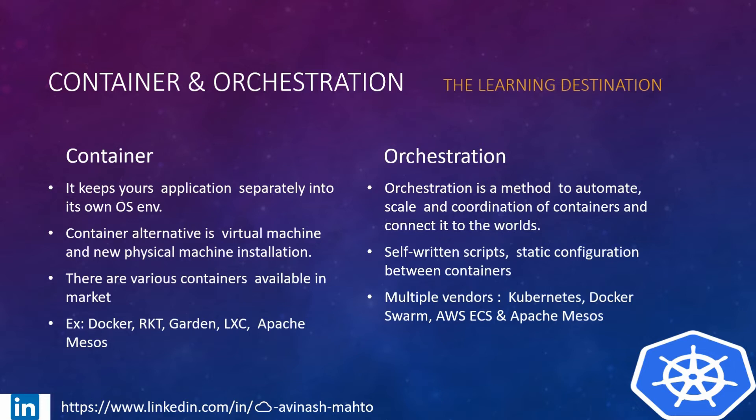Orchestration is a method to automate, scale, and coordinate containers and connect to the world. If I talk about the alternative of orchestration, you can write some scripts or programs, or do static configuration between containers. There are also vendors in orchestration like Kubernetes, Docker Swarm, AWS ECS, and Apache Mesos.